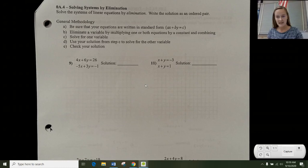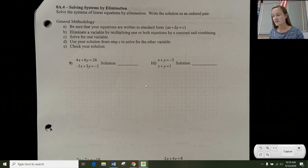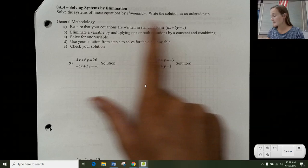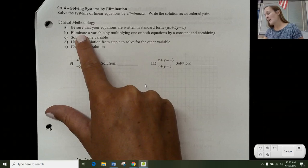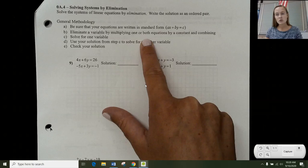So elimination, you're thinking about how I can eliminate a variable in order to solve. First, you want to make sure that you have your equations written in standard form. So that's AX plus BY equals C. Sometimes people think of that as the variables on one side, number on the other. You're looking to eliminate a variable by multiplying one or both equations by a constant and combining. So I'm going to show you what that means right now.